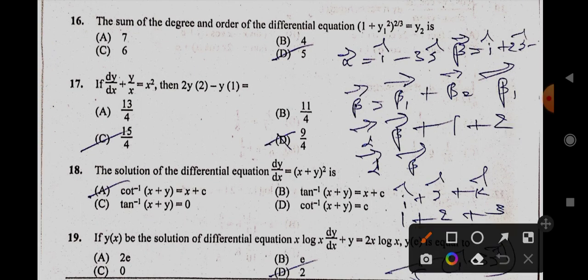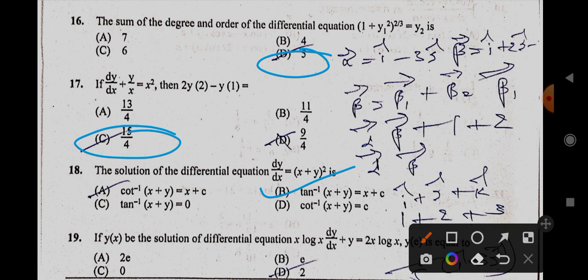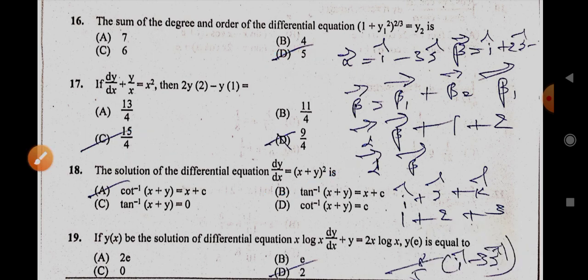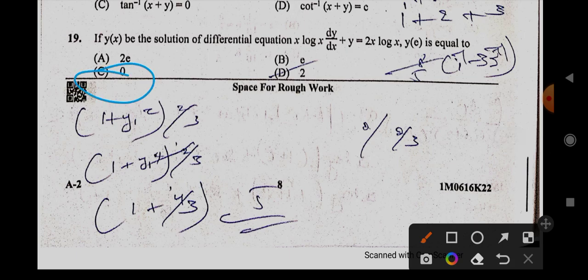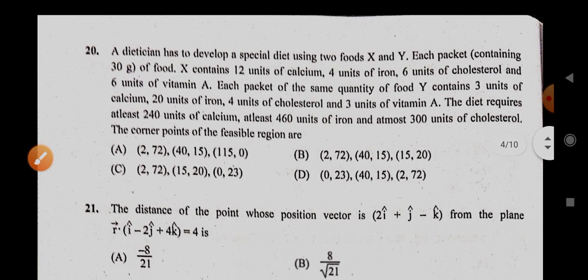And the next one is 16th one, 16th is D option. 17th one, C option. And 18th one is B option. 19th one is C option, 0 it is. And 20th, it is B option.